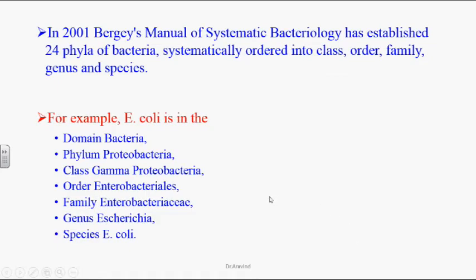There are 24 phyla of bacteria. To classify bacteria, in 2001 a scientist called Bergey organized the taxonomical classification for bacteria, known as Bergey's Manual of Systematic Bacteriology. According to this classification, for example, E. coli — the most common urinary tract infecting organism in females — belongs to the domain Bacteria and the phylum Proteobacteria.